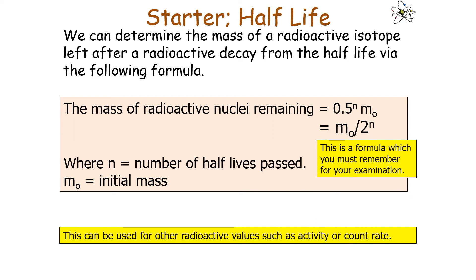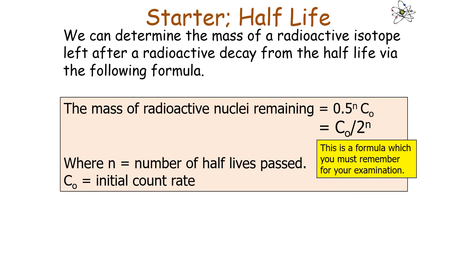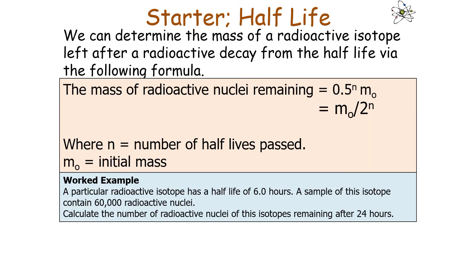The formula can also be applied to count rate: count rate remaining equals initial count rate times 0.5 to the power of the number of half-lives passed. Or it can be applied to activity. Any of those quantities can be used with this formula.